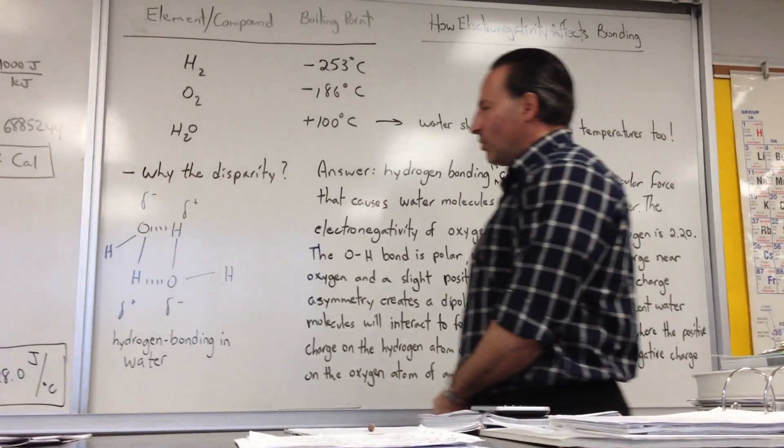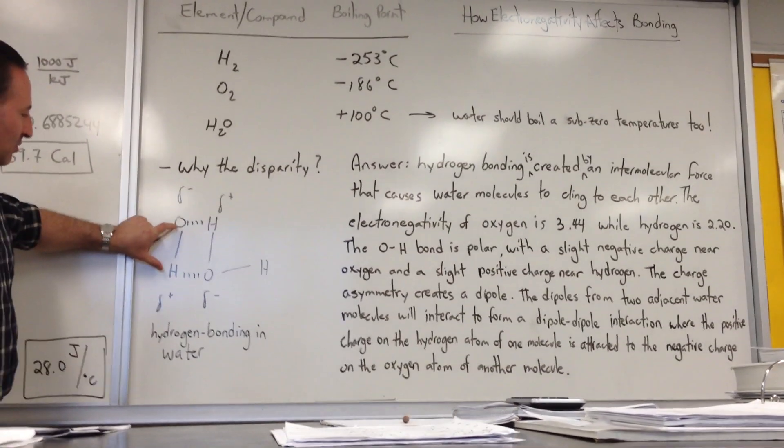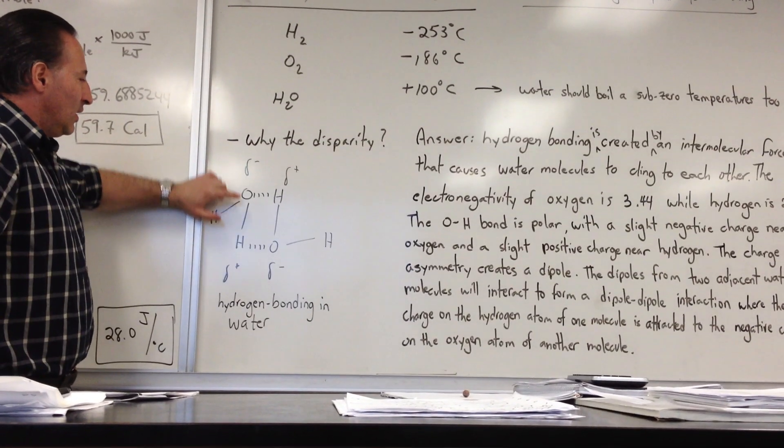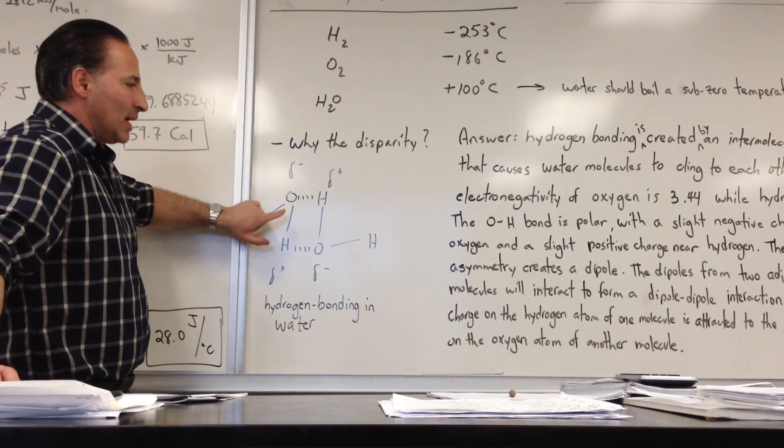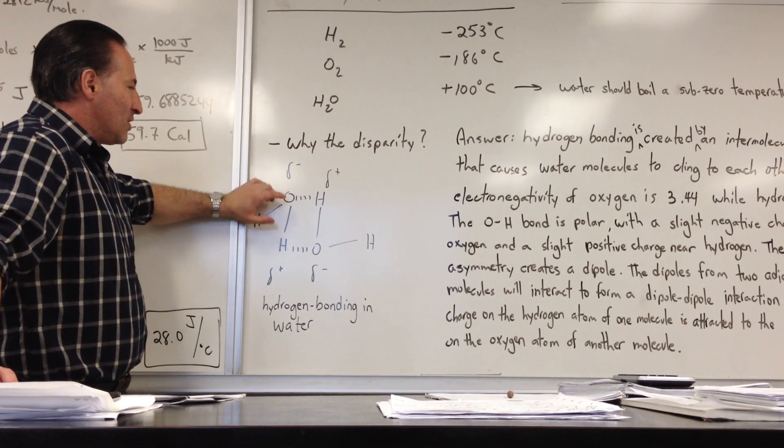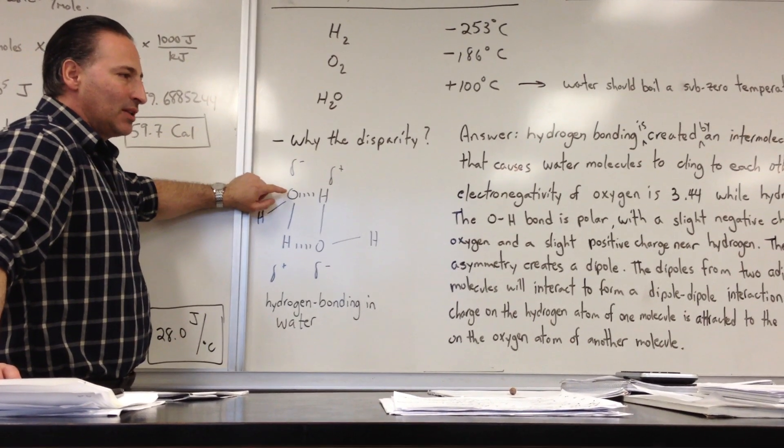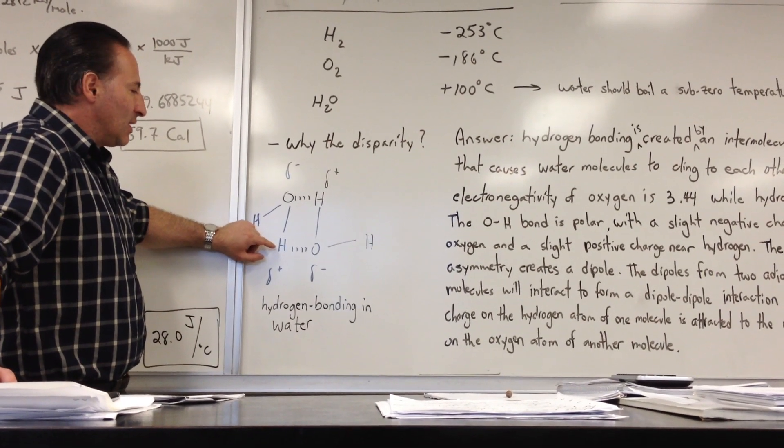The hydrogen bonding that happens in water is the result of a dipole that forms between the oxygen and hydrogen bond. The oxygen atom is considerably more electronegative than hydrogen, so it pulls the electrons closer to it in the bond between oxygen and hydrogen. So you get a slight negative charge forming at the oxygen atom in water, whereas you get a slight positive charge forming at the hydrogen atom.